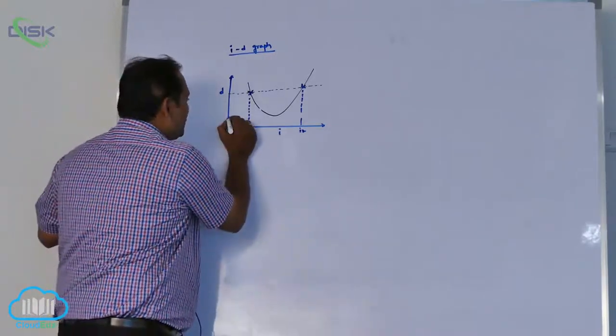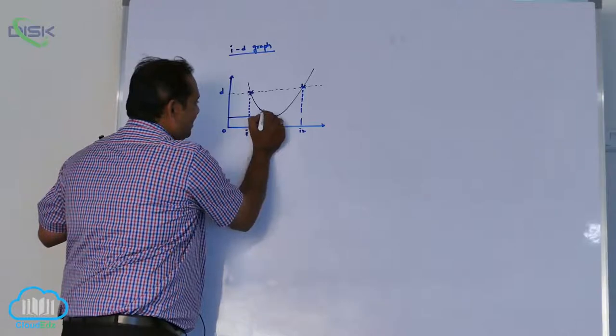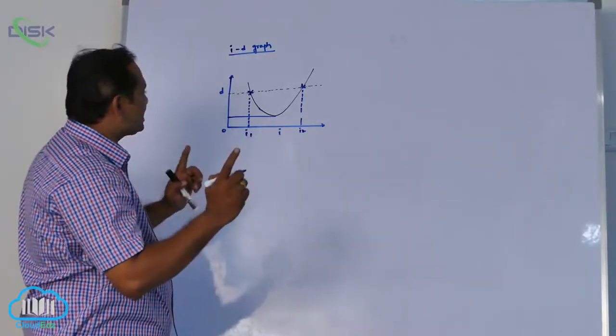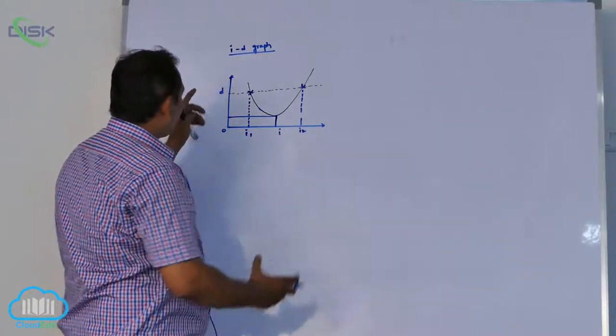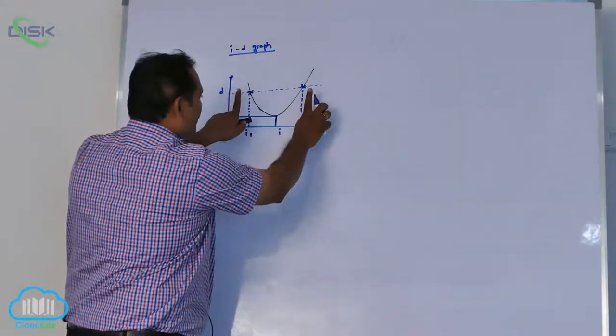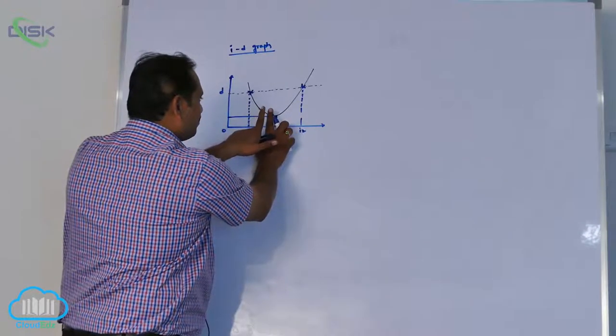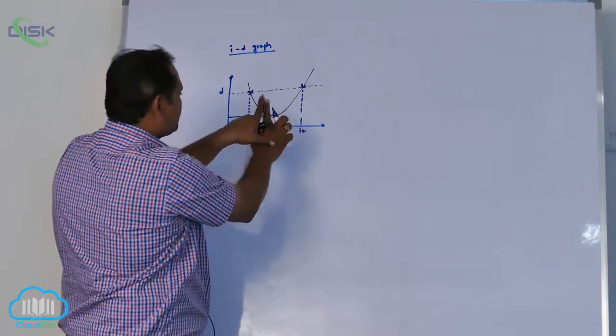But at one place like this, I am going to get only one intercept. What is the meaning of this? For other angles I am getting two angle of incidences. At minimum deviation, these two angles are merged in each other.